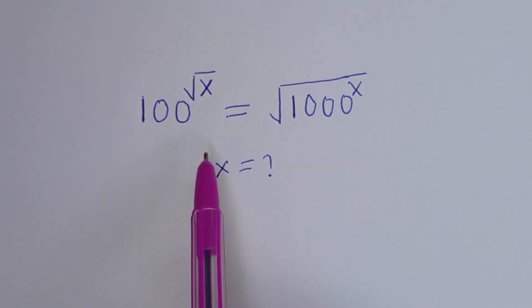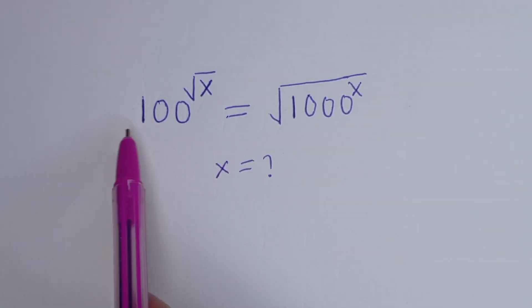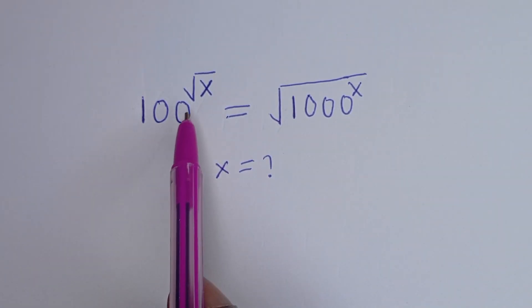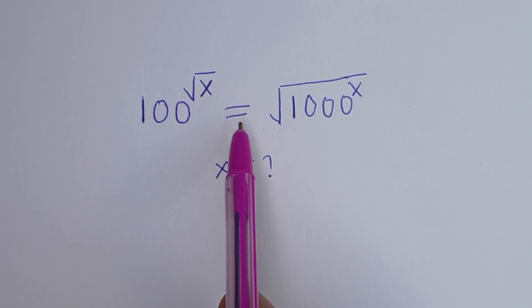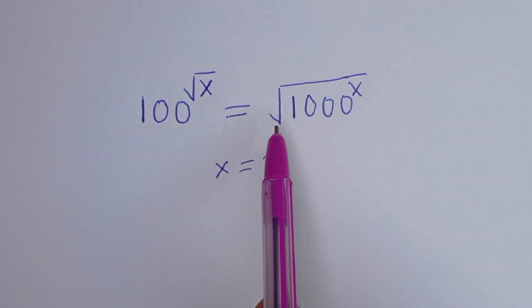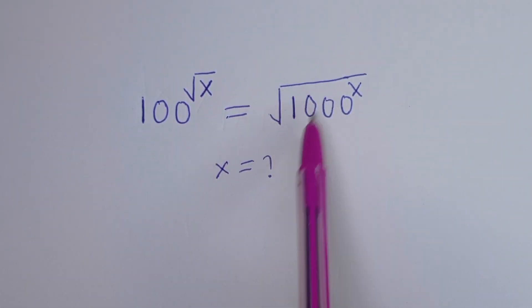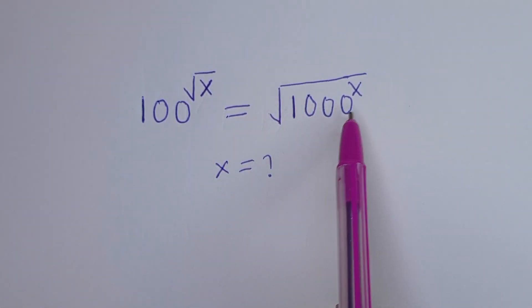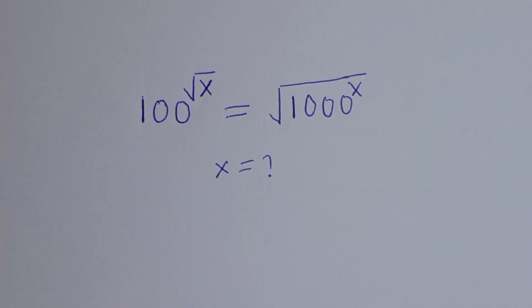Hello. How to solve for s in this beautiful equation: 100 to the power of square root of s is equal to square root of 1000 to the power of s.